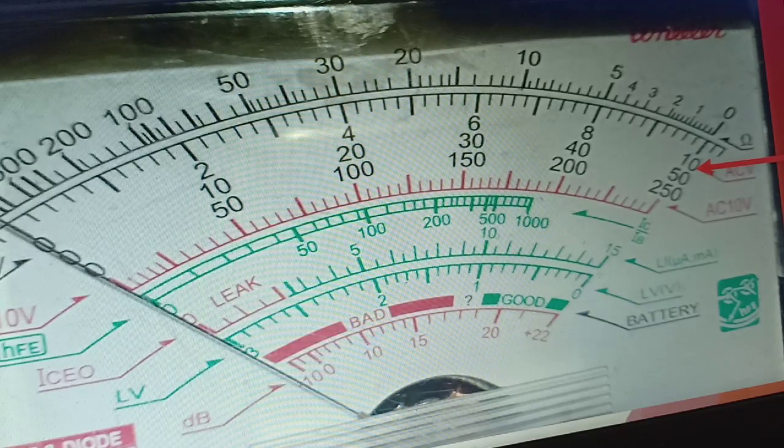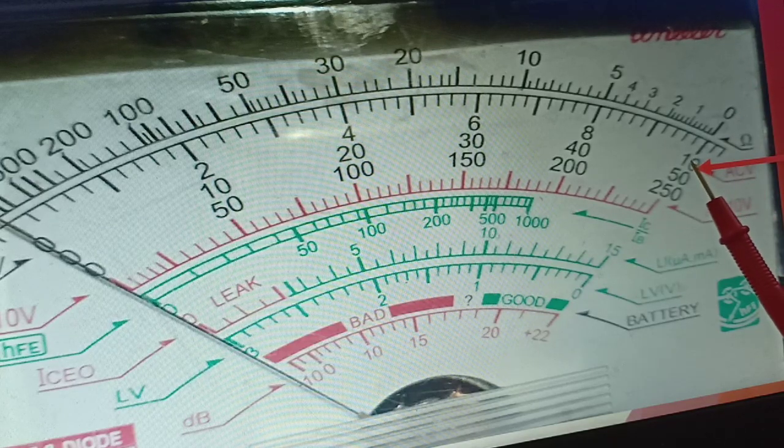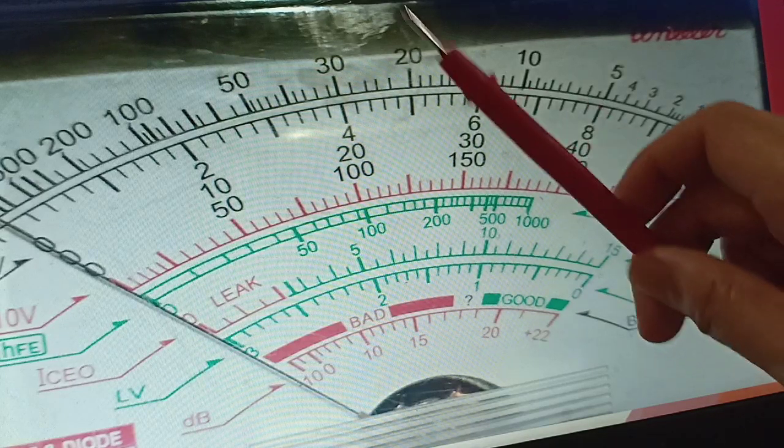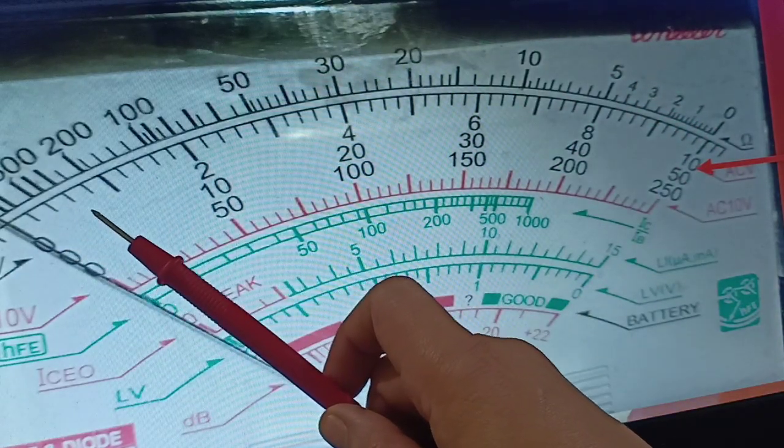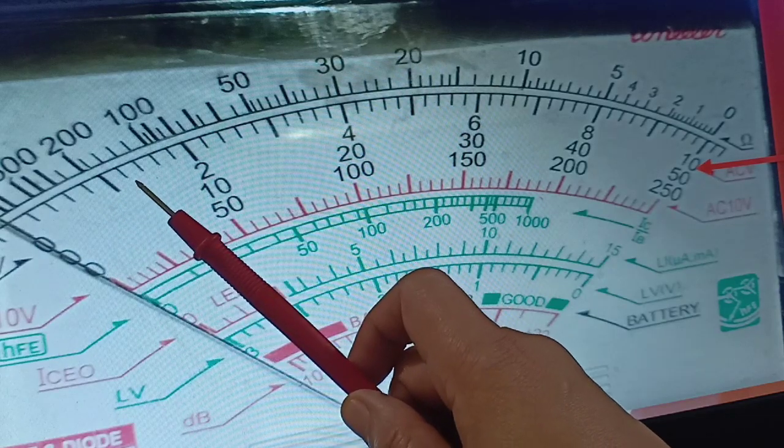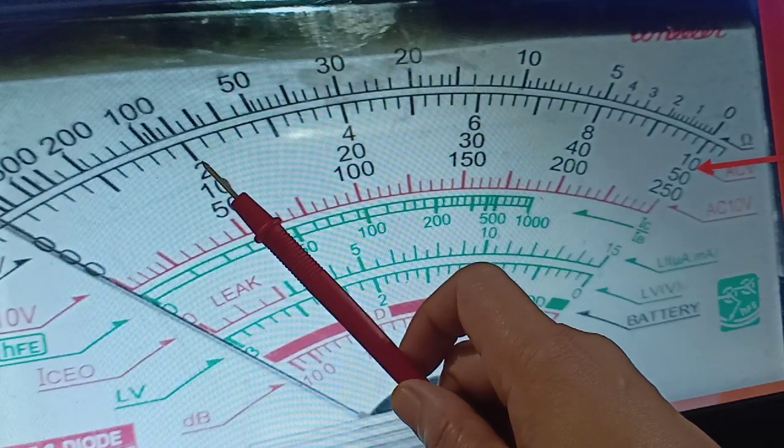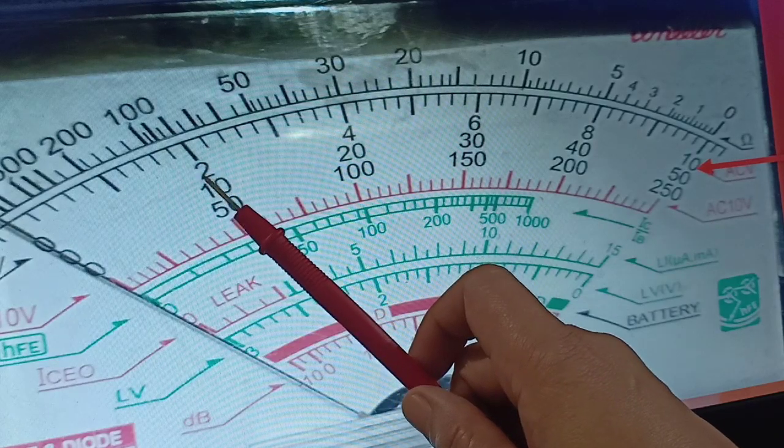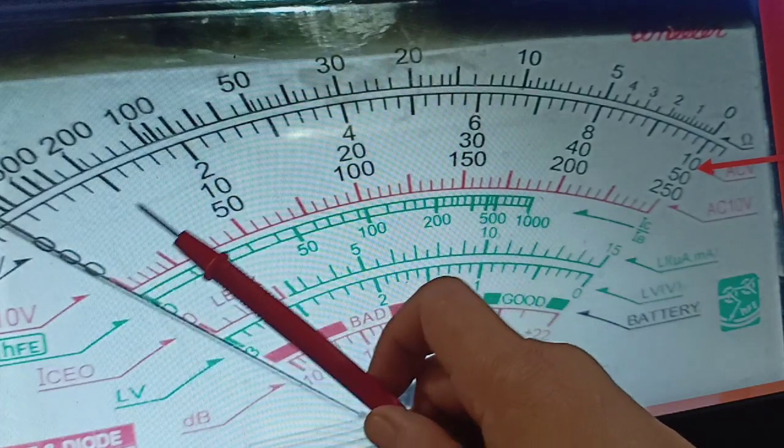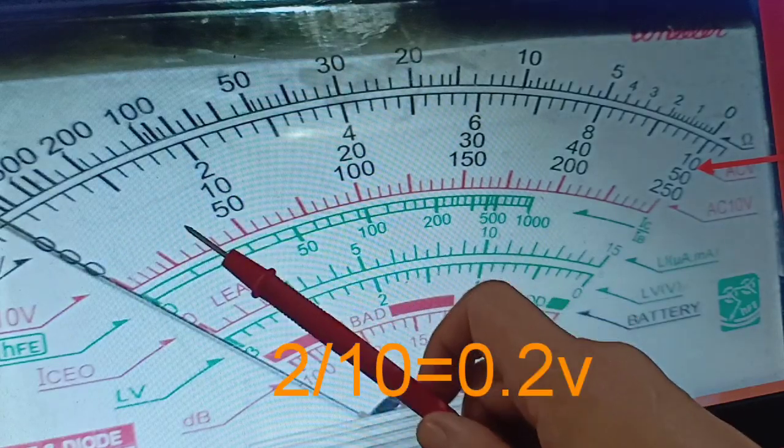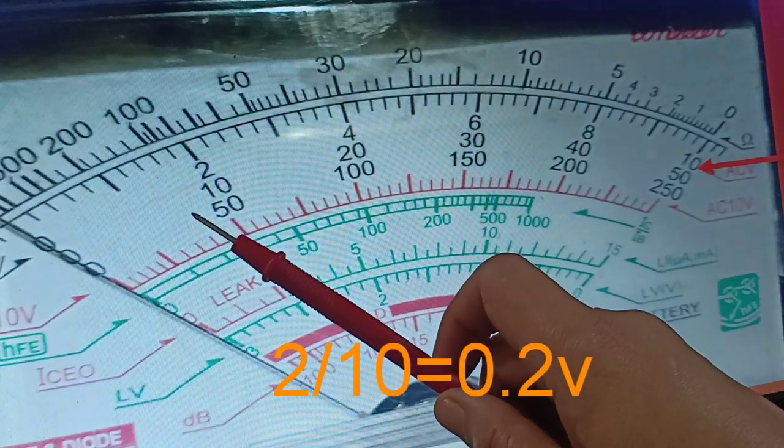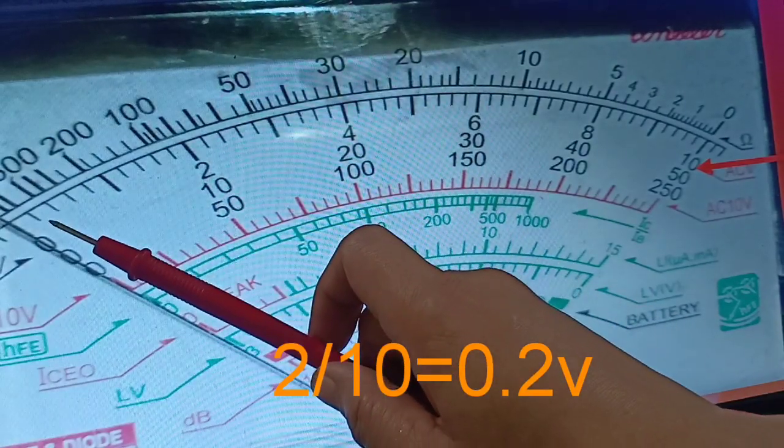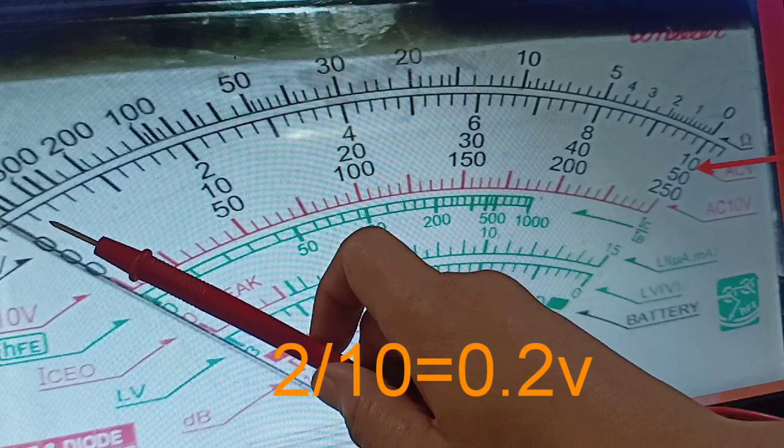In here, we have 10. So, let us count the number of lines. 1, 2, 3, 4, 5, 6, 7, 8, 9, 10. So from 2, there are 10 deflection, 10 graduation, 10 lines. 2 divided by 10, that is equivalent to 0.2. Meaning, each line is equivalent to 0.2 volts.